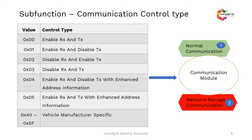Control types 0x04 and 0x05 — enable RX and disable TX with enhanced address information — are used when a LIN network node is connected to a particular ECU server and that LIN node has to be addressed with a given identifier. So 0x04 and 0x05 are meant for a subnet ECU as part of an ECU address. Values 0x40 and above are for vehicle manufacturer-specific communication control types.